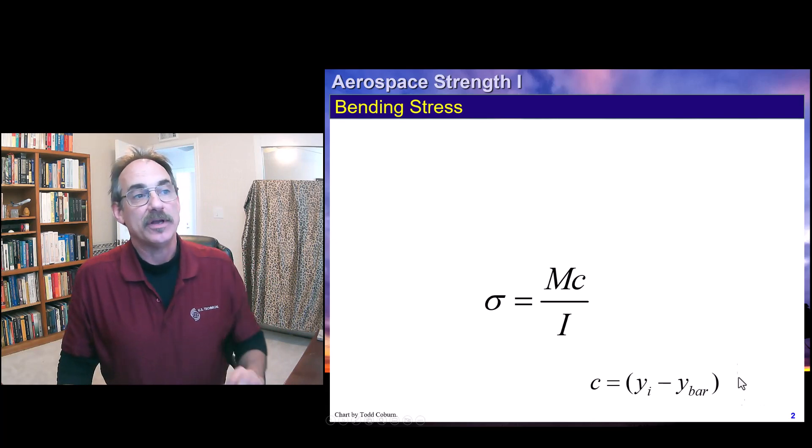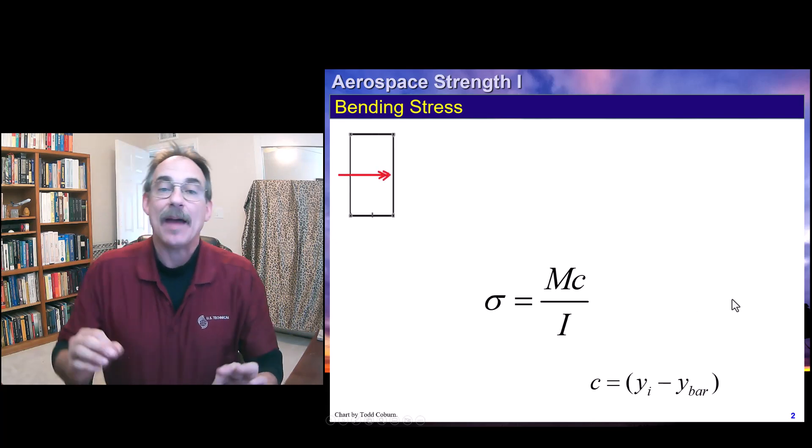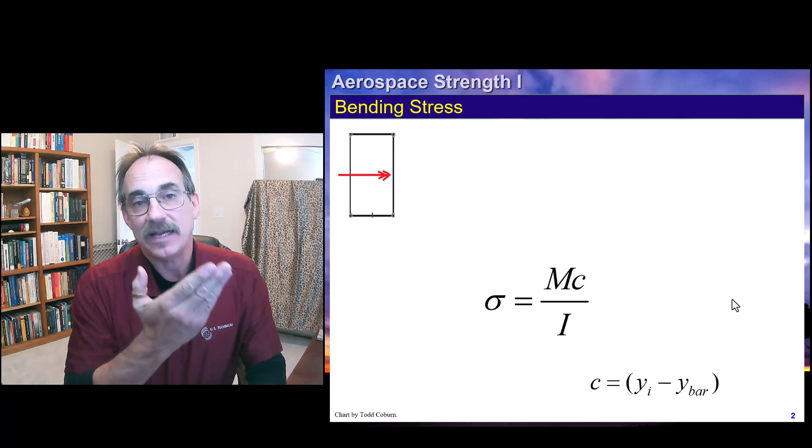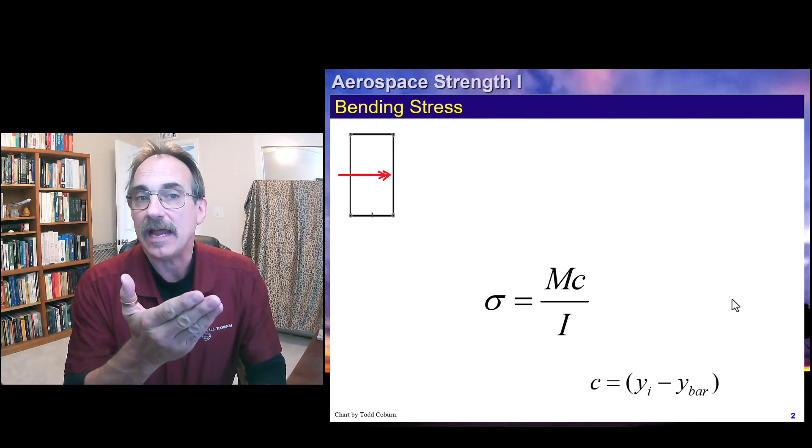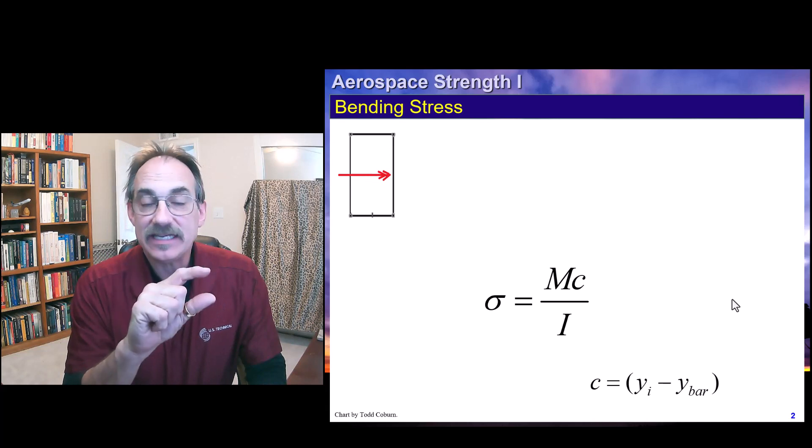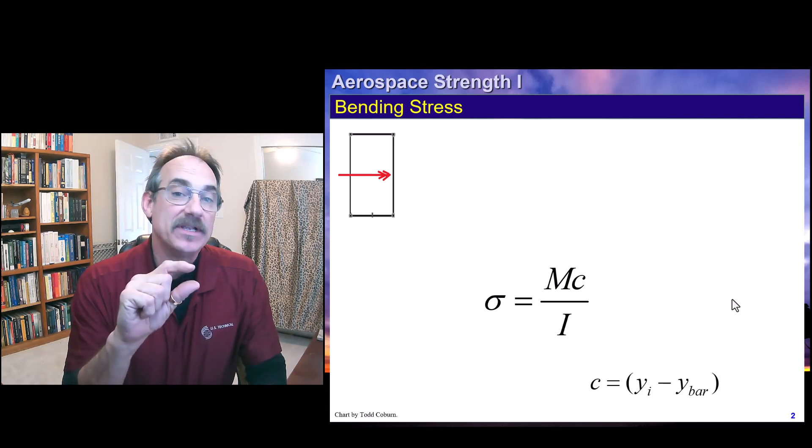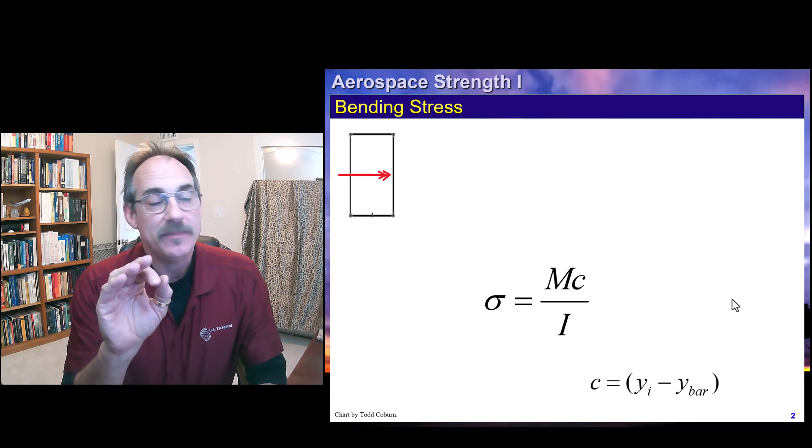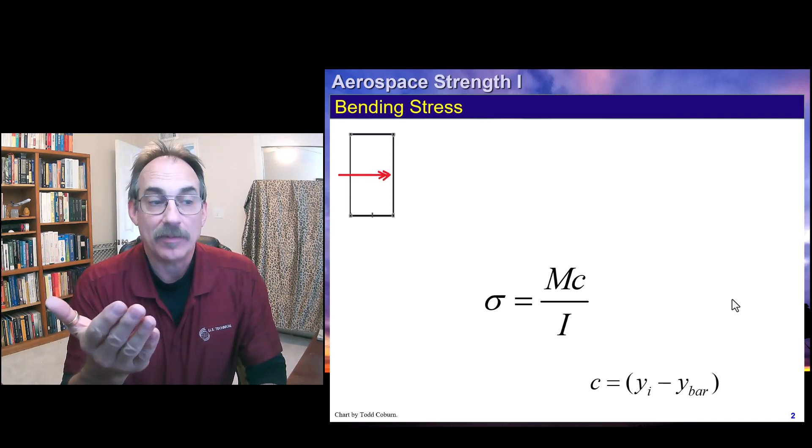And actually, while you can follow rigorous application of the right-hand rule to nail this with just the careful application of a more detailed formula, such as I laid out in my handbook, if you can remember this basic formula, mc over i, and the idea that c is the distance from the centroidal axis to the point in question, then you should be able to nail your problems.